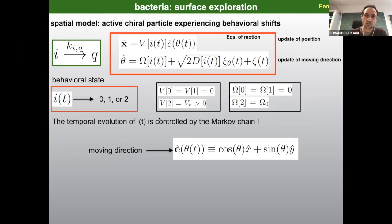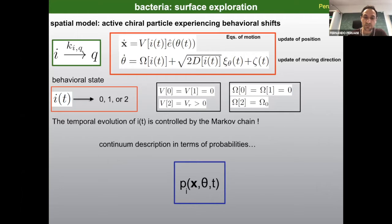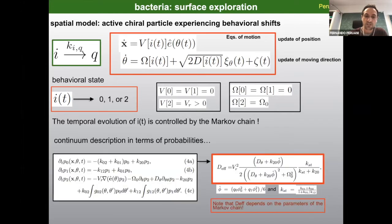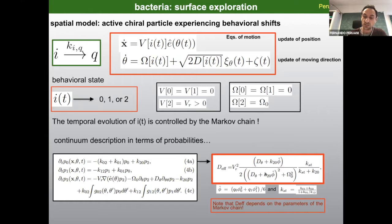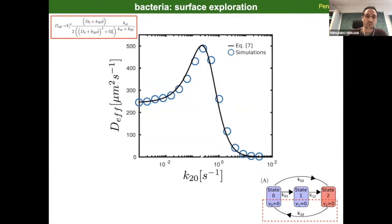How can we describe how bacteria move using this type of equation? It sounds like the only option is simulation, but one can do some analytics. You can describe what happens in terms of the probability of finding the bacterium in state i, at position x, moving in direction θ, at time t, and derive equations for these probabilities. Doing so leads to a forward Kolmogorov equation with transition terms — a system of equations from which you can obtain the diffusion coefficient of the bacterium.